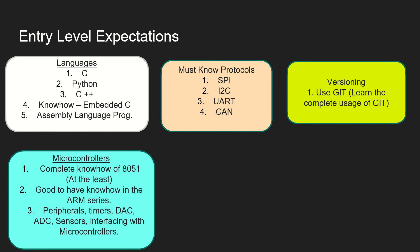Microcontrollers — this is something very, very important. We cannot afford to miss it when we wish to become an embedded system engineer. Complete know-how of one microcontroller is very important. I prefer you to know at least 8051 because it is the easiest — when you learn 8051 you'll understand how simple microcontrollers can be. If you have knowledge of ARM7, ARM9, or any other ARM version, that's pretty helpful as well. Learn how peripherals are interfaced, how timers are used, why DAC and ADC are needed, and sensors and interfacing.